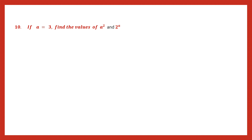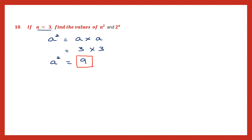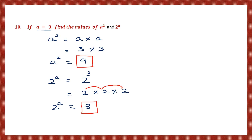Question 10: if a equals 3, find the values of a squared and 2 raised to the power of a. First, a squared means a into a, and a is 3, so 3 into 3 — 3 threes are 9. So the value of a squared is 9. Now 2 raised to the power of a: a is 3, so 2 to the power of 3 is 2 into 2 into 2. 2 twos are 4, 4 twos are 8. So 2 raised to the power of a equals 8.